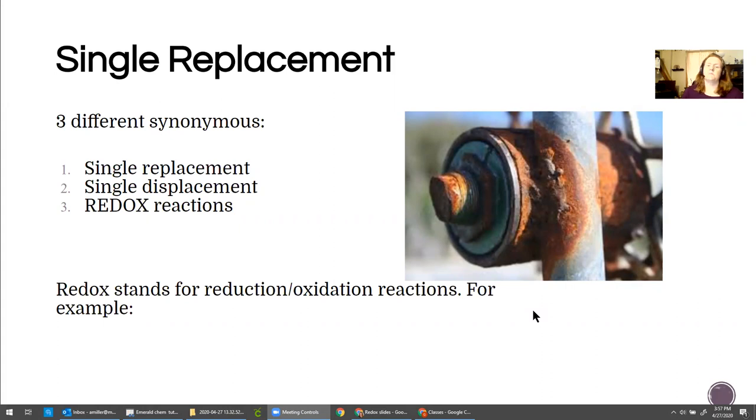Essentially this can happen whenever two metals of different activities are touching each other. So the point of this discussion today is to explain some vocabulary to you and also allow you to predict when two metals in contact with each other might react. Sometimes they do and sometimes they don't.